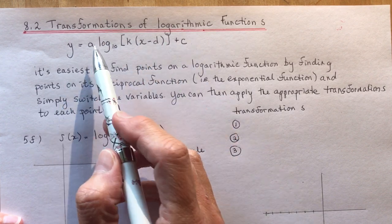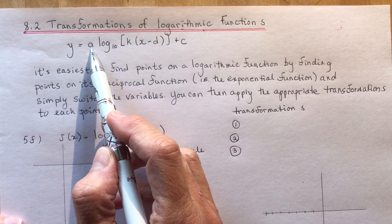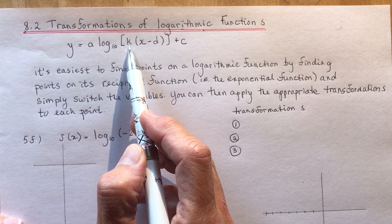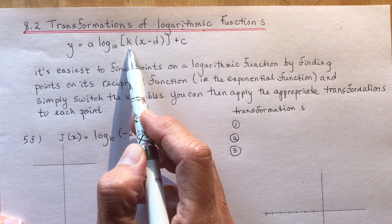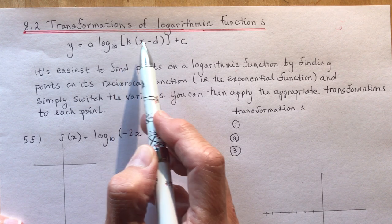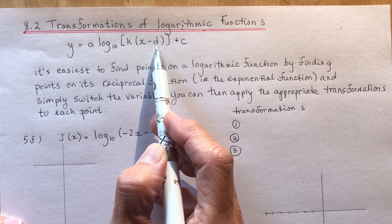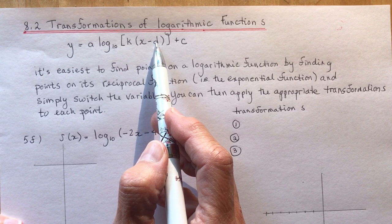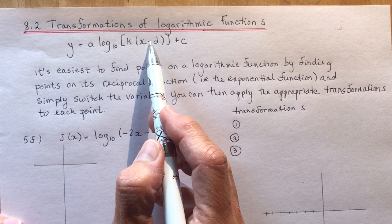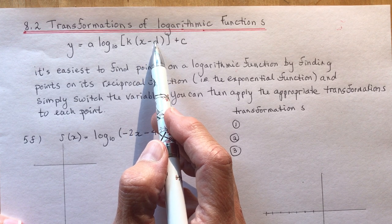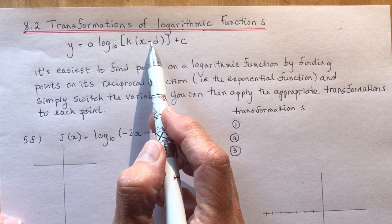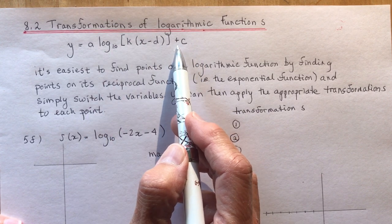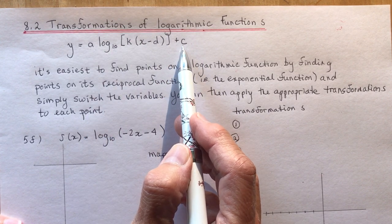You know what all these things stand for? A is a vertical stretch or compression by a factor of A. K is a horizontal stretch or compression by a factor of 1 over K. Remember X are weird. D is a horizontal shift D units. So in this case, if this was a 2, it would be 2 units to the right. If this ended up being negative 2, it would be 2 units to the left. And plus C is your vertical translation up or down.